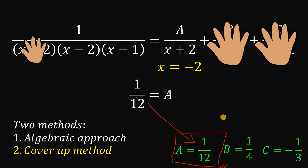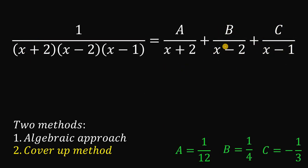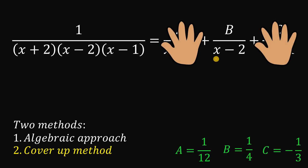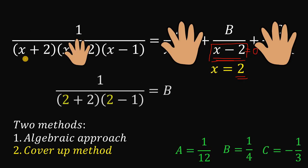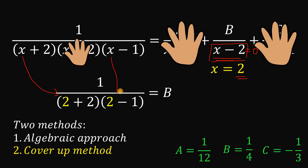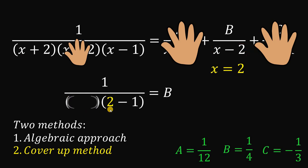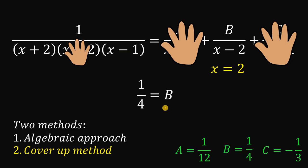For the value of B, cover A and C, and cover the denominator of B, which is x minus 2. Equate x minus 2 to 0, giving x equals 2. Replace all x with 2: B equals 1 over (2 plus 2) times (2 minus 1) equals 1 over (4 times 1) equals 1 over 4.